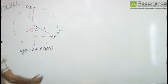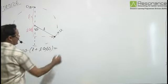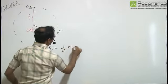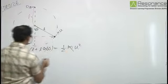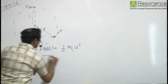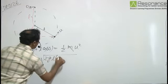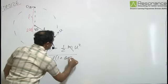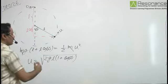For this, the kinetic energy to be given is half mu squared. From here, we can write u equals square root of 2gL times (1 + cos 60). Cos 60 is half.